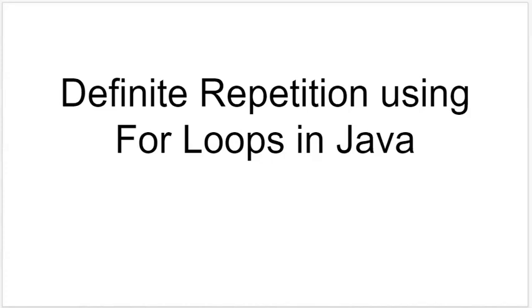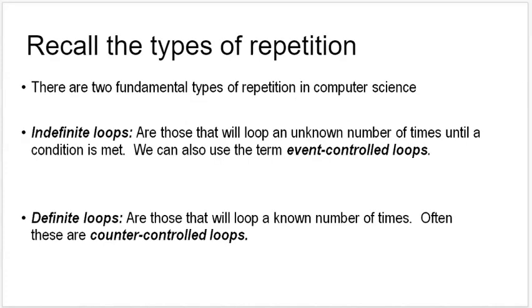Hi everyone. Today we'll be looking at for loops, also known as definite repetition. Now if we remember back to while loops, while loops would continue until some condition was met. So we were never sure how many times the loop would go.